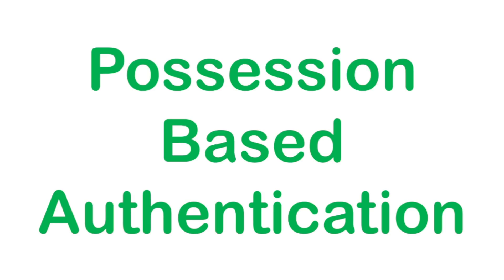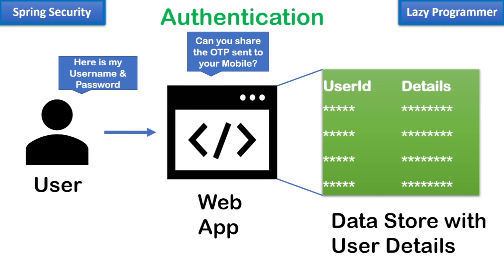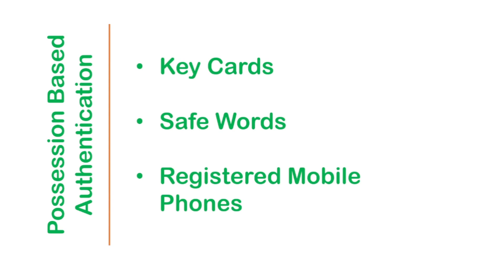There are other authentication mechanisms like possession-based authentication. Before you log in, the web application sends you an OTP on the mobile, which is supposed to be in your possession. As we know, stealing a mobile phone is more difficult than stealing a password. Other examples of possession-based authentication can be keycards used to swipe for access, or safe words which act as access tokens generated on the go from dedicated devices. These items are supposed to be in your possession, which is why it is known as possession-based authentication.